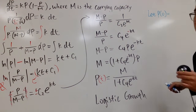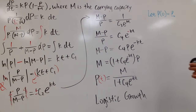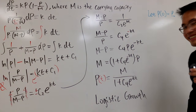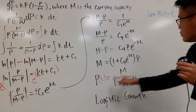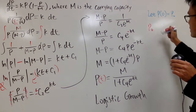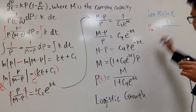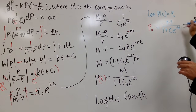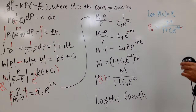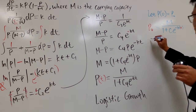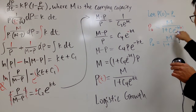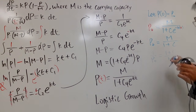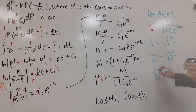To continue, I add p on both sides, so we have M equal to p plus c4 p e to the negative kt. We can factor out that p, giving M equal to p times 1 plus c4 e to the negative kt. I like to put the p at the end to emphasize this is multiplication.